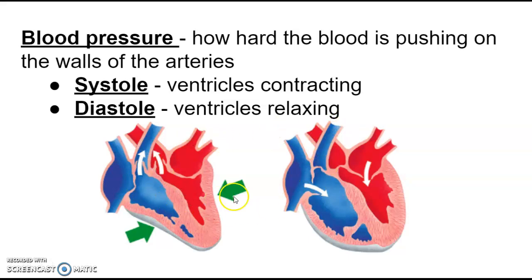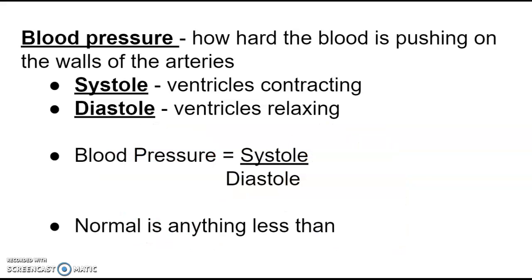So how do we figure out our blood pressure? If we have two different things happening — a period of high pressure and a period of low pressure — what is our blood pressure? Our blood pressure is actually both of these numbers combined. When you get a blood pressure reading, it's two numbers: systole, that squeezing number where there's high pressure, over diastole. The top number is always going to be higher because this is when the ventricles are squeezing blood out of the heart and there's high pressure in the arteries.